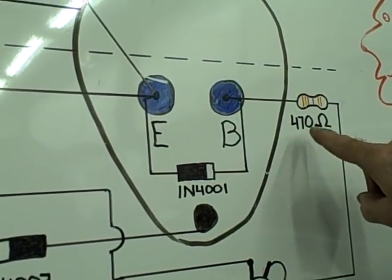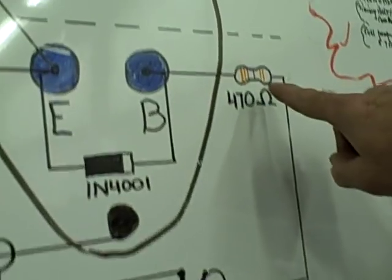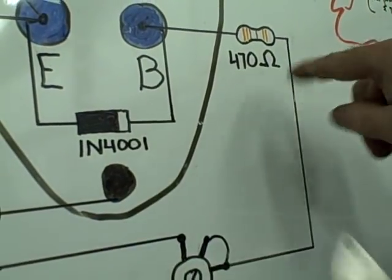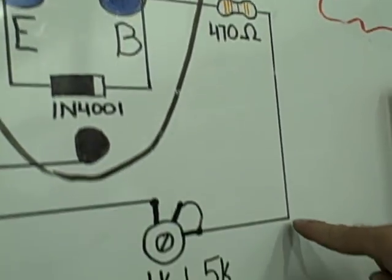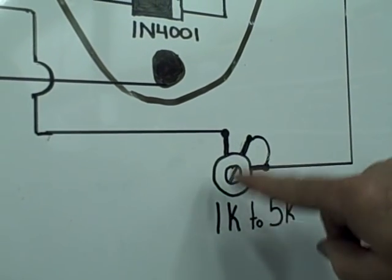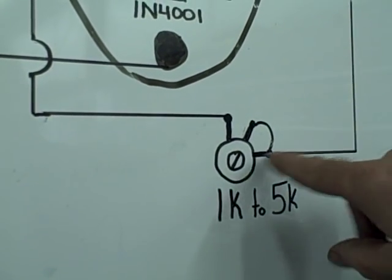Then second, you're going to get a resistor which is 470 ohms and you're going to solder him off the base as well. He's going to come off the side here as you can see, and you're going to solder him into a potentiometer, 1K to a 5K should work.